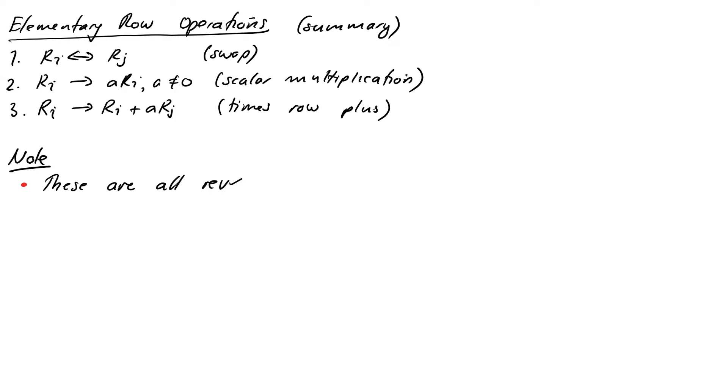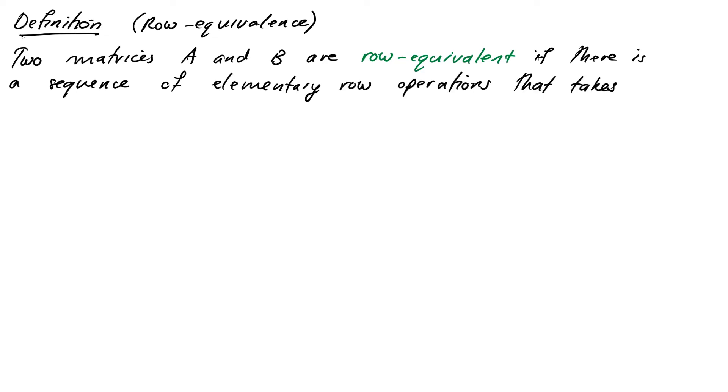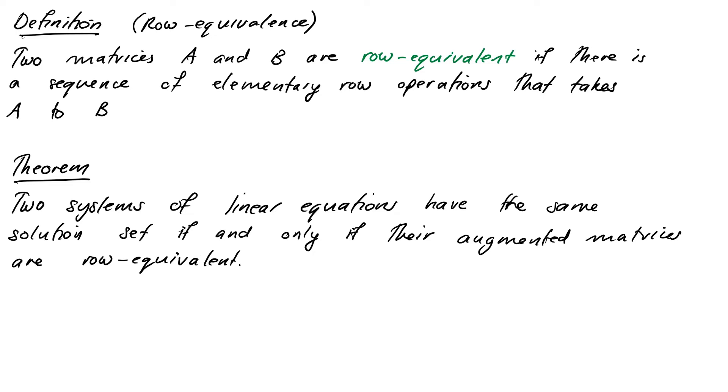Notice also that all of these operations are reversible. That means so long as we stick to these operations, we're guaranteed to retain the solution to our system of equations. We're not going to accidentally throw away one of the equations. A quick couple of bits of terminology before we move on. First is the concept of row equivalence. We say that two matrices A and B are row equivalent if there exists a sequence of elementary row operations that takes A to B. Then we can state our result about solutions being preserved more formally as the following theorem: two systems of linear equations have the same solution set if and only if their augmented matrices are row equivalent. This justifies us using these operations to try and attack a matrix and make it as simple as possible.